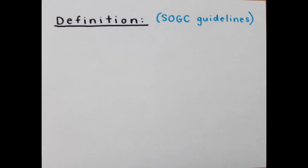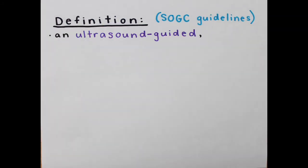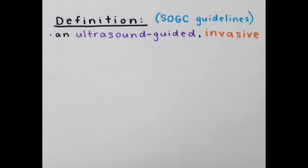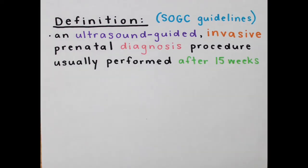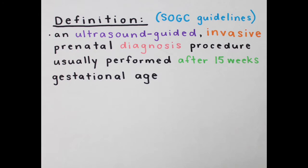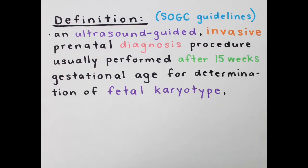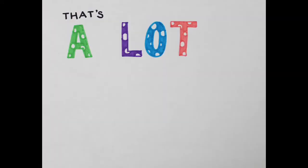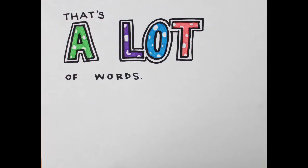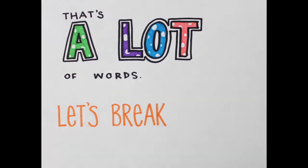The definition of amniocentesis, according to the SOGC guidelines, is an ultrasound-guided, invasive prenatal diagnosis procedure, usually performed after 15 weeks gestational age, for determination of fetal karyotype, molecular, and biochemical abnormalities. Now, that's a lot of words. Let's break it down.